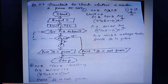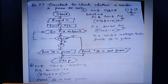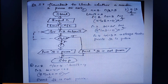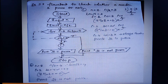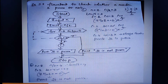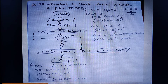Hello, dear students. Welcome to computer science class. Today in our video class, let us start with a flowchart to check whether a given number is prime or not. A prime number is a number which is divisible by one and itself; such numbers we usually refer to as prime numbers.